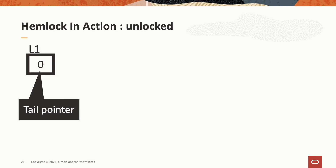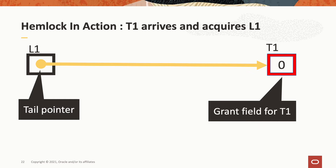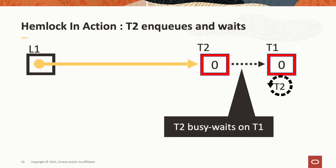Now we'll take a look at Hemlock in action and examine the unlocked state. We have lock L1 with a tail pointer field that is zero or null, indicating the lock is not held. Thread T1 arrives to acquire L1. T1 swaps the address of its grant field into L1's tail pointer. The tail pointer now points to T1's grant field. The return value from the atomic swap operation was zero. Therefore, T1 acquired the lock without contention without a need to wait and can immediately enter the critical section. Thread T2 now arrives and attempts to acquire lock L1. T2 enqueues itself using an atomic swap operation to install the address of its grant field into L1's tail pointer. The value returned refers to T1's grant field. Since that value is non-null, T2 knows it must wait. T2 then proceeds to busy wait on the value inside T1's grant field.